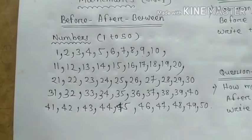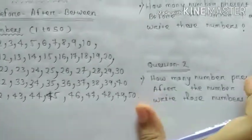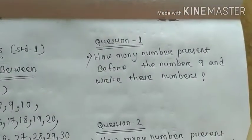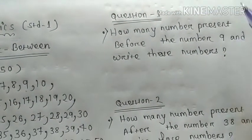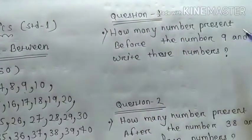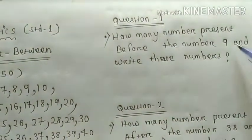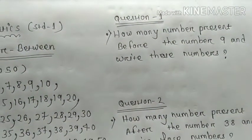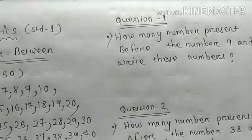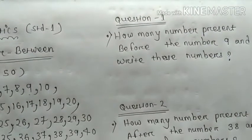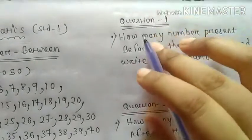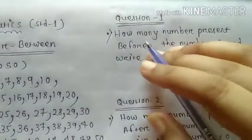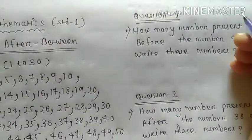Then question. Question 1. How many numbers present before the number 9? And write those numbers. Which number is present before the number 9? The first 9 round up.